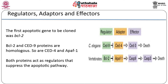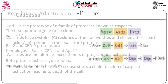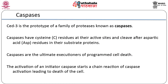Three general types of proteins are critical in this conserved pathway. Regulators either promote or suppress apoptosis — CED9 and BCL2 both function to suppress apoptosis in the presence of trophic factors. Adapters interact with both regulators and effectors; in the absence of trophic factors, they promote activation of effectors. A family of cysteine proteases serve as effector proteins — their activation leads to degradation of various intracellular substrates and eventually leads to cell death.